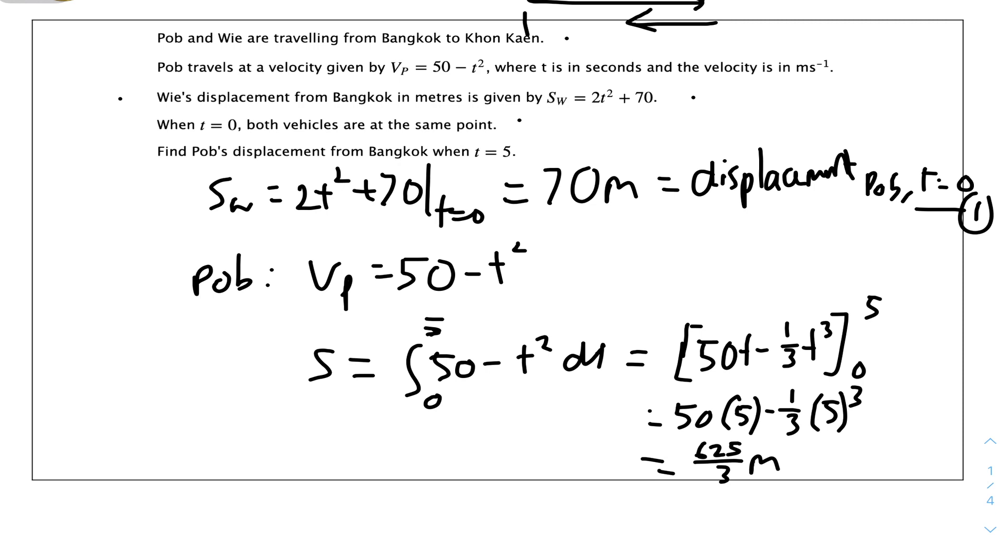Because we know that at t equals 0, Pop's displacement equals Wee's displacement which is 70 meters from Bangkok, we have to add 70 to 625 over 3 meters. Therefore the displacement equals 70 plus 625 over 3, which equals 835 over 3 meters. And that's the answer.